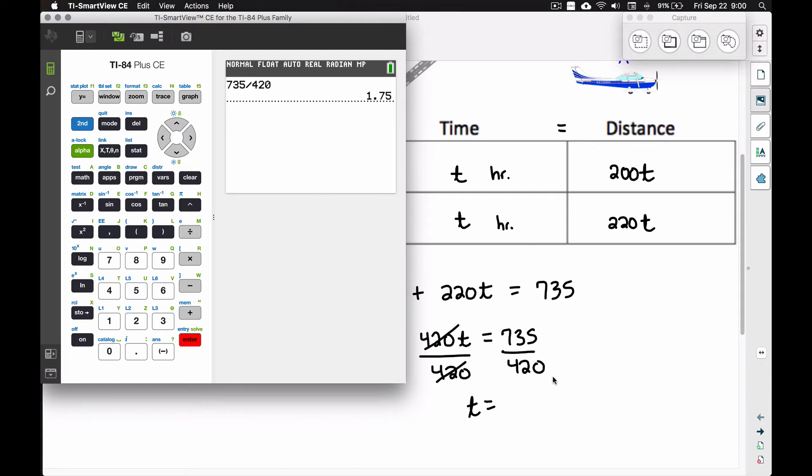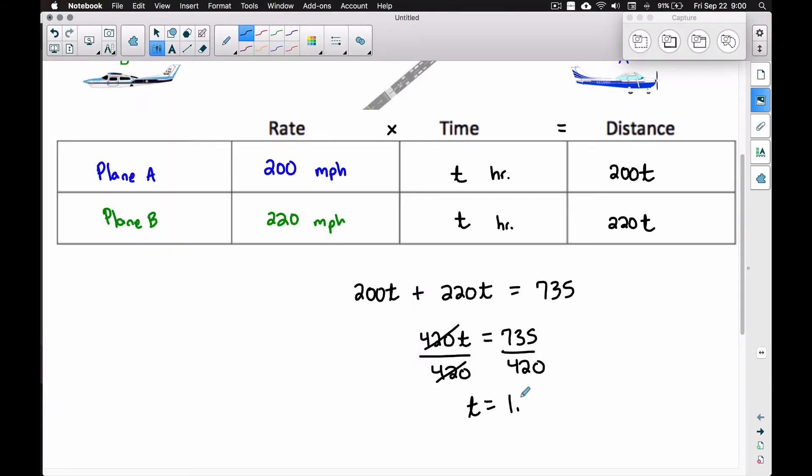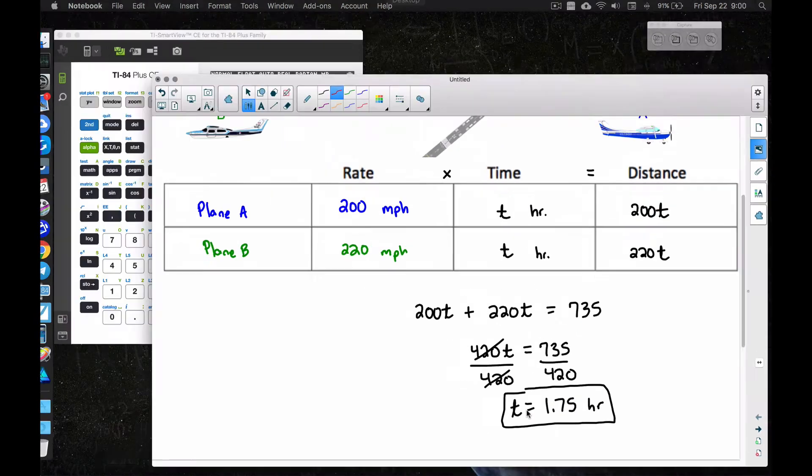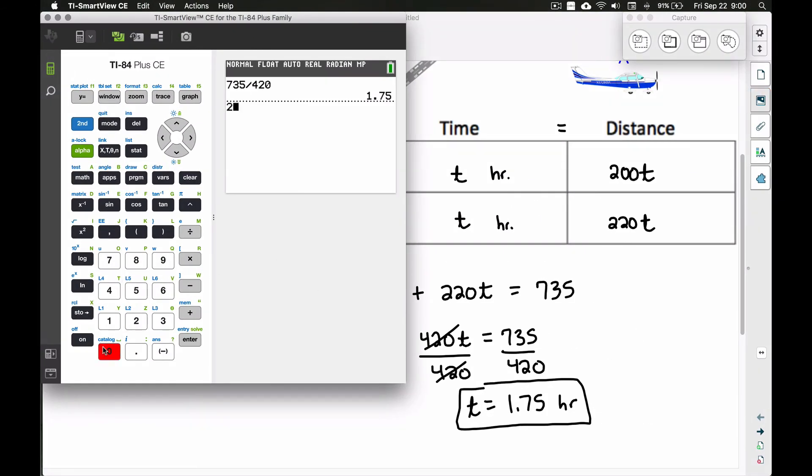So t equals 1.75 hours. Now let's check this before we convert to minutes. This means the planes, since they left at the same time and they're both in the air, if we look at Plane A, Plane A was going at a speed of 200 miles per hour, and that plane traveled for 1.75 hours. Let's look at these numbers. Let's take the 200 miles per hour and multiply it times the time that the plane traveled, 1.75 hours. That's going to be 350 miles, and that's going to be Plane A.